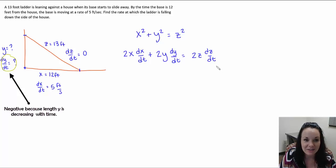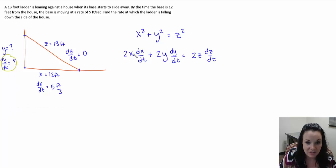All right, so back to the task at hand. Do we have all the information that we need? We have x, that's 12 feet. dx dt is 5 feet per second. Do we have y? No, we do not. But we can find it.